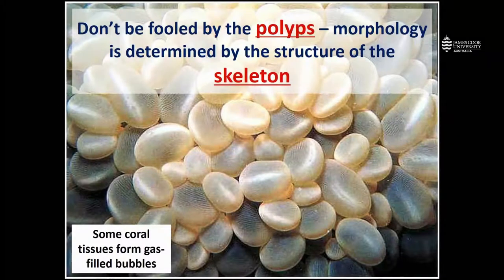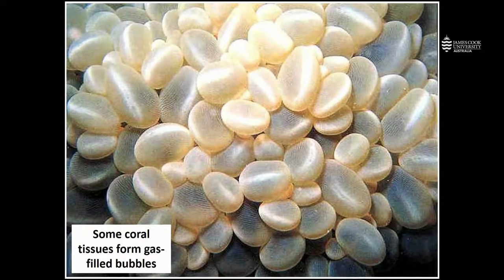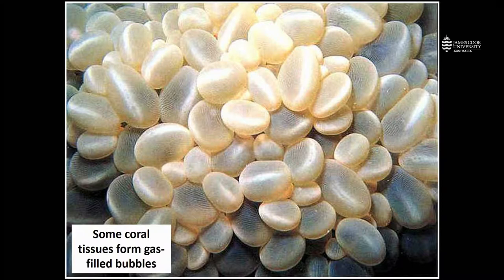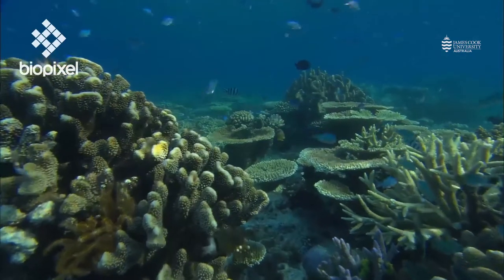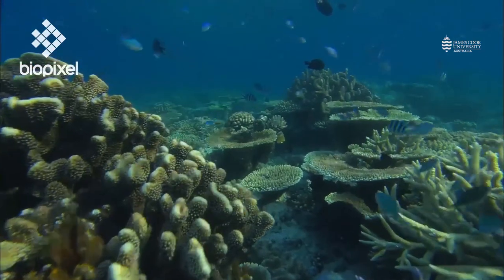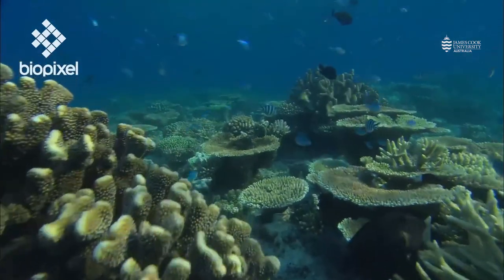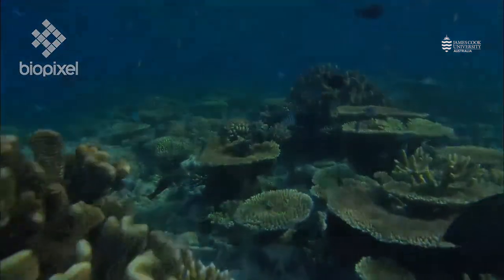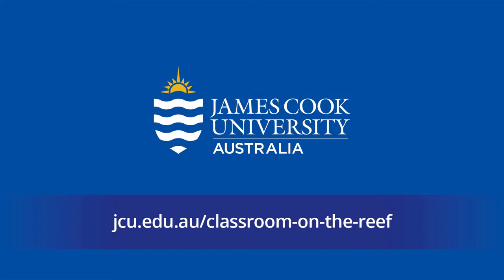We have another massive coral, but in this case the coral tissues are forming gas-like bubbles that again hide the underlying structure of the skeleton. Sometimes, to be able to see the skeleton, you need to waft some water over the coral tissue surface to get the tissues to retract so that you can see the skeleton.